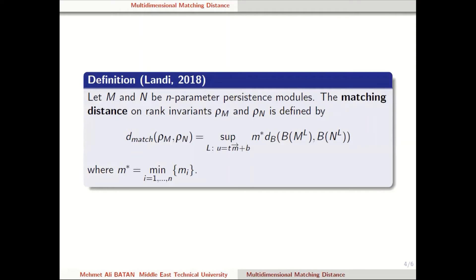The definition of matching distance: let M and N be n-parameter persistence modules. The matching distance on rank invariants, denoted rho_M and rho_N, is defined by the following equation. Since M restricted to L and similarly N restricted to L are one-parameter persistence modules, we can have barcodes in the one-dimensional case. Since we have barcodes — two different barcodes — we can compute the bottleneck distances between barcodes. The M-star factor is for normalizing: M-star is nothing but the minimum of the components. We are taking the supremum over all lines mentioned above.